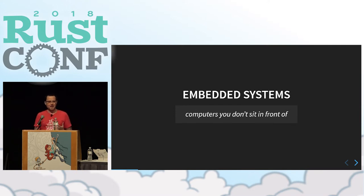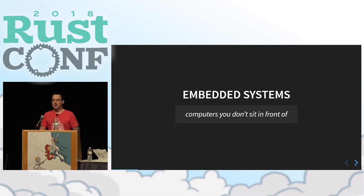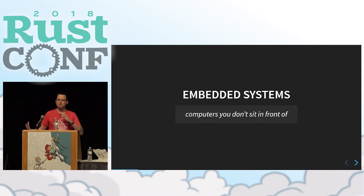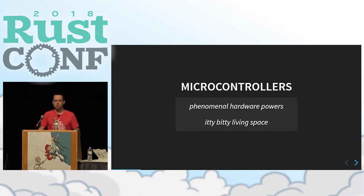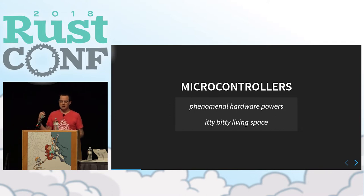I haven't done a good job of defining what embedded systems are. My tongue-in-cheek description is: computers you don't sit in front of. This could be anything from the TV remote on your coffee table to the engine control system for a rocket - satellites, electronics in airplanes. All of these are combinations of hardware and software designed to do one thing really well. Not a general purpose computer, but a very purpose-built system. For today's talk, we're going to focus way down on the smaller side: microcontroller systems, way closer to an Arduino than something like a Tegra dev kit that can do machine vision.